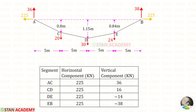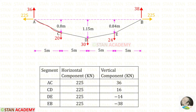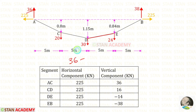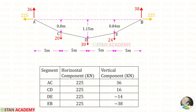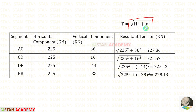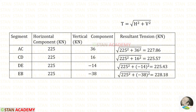Now we are going to find the tension. For all members, the horizontal component will equal the horizontal thrust of 225 kN — we only need to find the vertical component for each. For member AC, the vertical component is 36. For CD, it is 36 minus 20, giving 16. For DE, it is 36 minus 20 minus 30, giving minus 14. For EB, it is 36 minus 20 minus 30 minus 24, giving minus 38 — alternatively, we can directly use the vertical reaction at B, which is 38. Using the tension formula, we can find the tension in all segments. Thank you for watching this video.